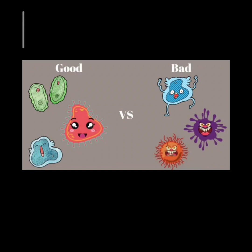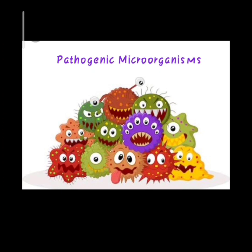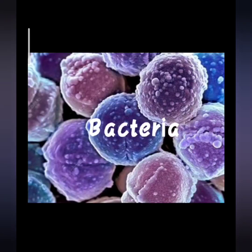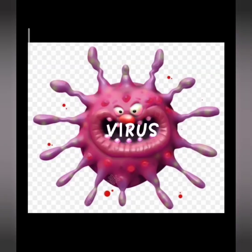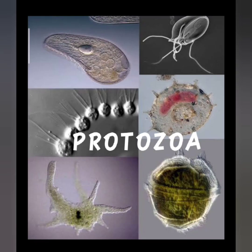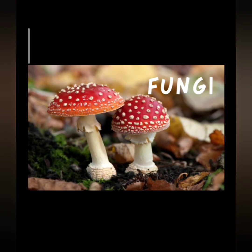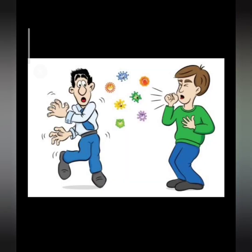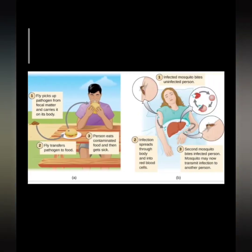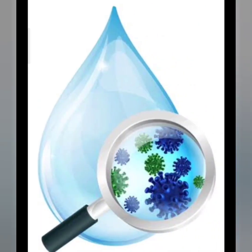Microorganisms can be harmful in many ways. For example, some microorganisms cause diseases in human beings, other animals, and plants. Those microorganisms which cause diseases — pathogens — can be bacteria, viruses, protozoa, or fungi. These disease-causing microorganisms or pathogens enter our body through the air we breathe and the food we eat or the water that we drink.